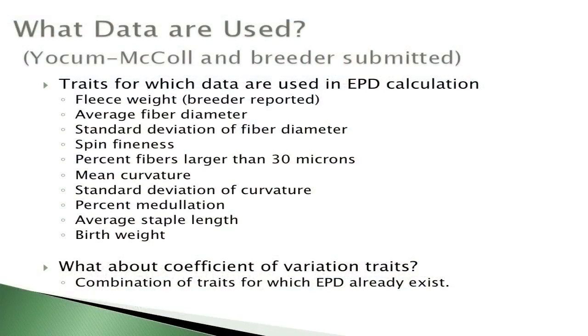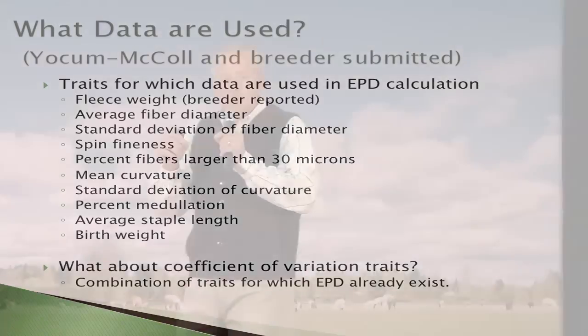A common question is about CV values you get back from Yoakam McCall. CVs are not in the EPDs because they're really just a function of two EPDs — the average and the standard deviation. Reporting a CV EPD would cloud the issue because we've already captured all of those genetics in average fiber diameter and standard deviation of fiber diameter. If that's something you're worried about, you can actually calculate it based on the EPDs.